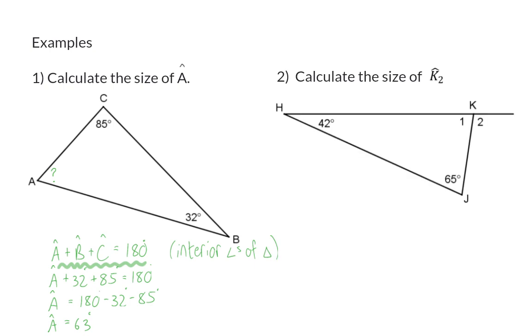In example two we need to calculate the size of angle K2. This is the exterior angle of the triangle that is formed when side HK is lengthened. The exterior angle of a triangle is always the same size as the sum of the two opposite interior angles. So here we know that K2 is equal to angle H plus angle J.